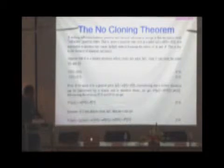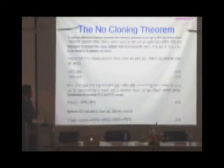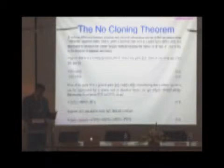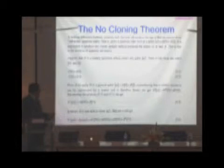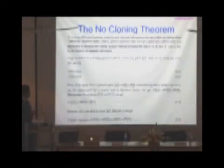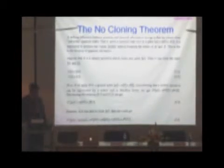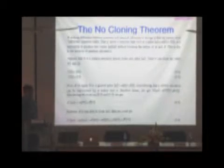Next we come to the no-cloning theorem. A striking difference between quantum and classical information storage is that we cannot clone unknown quantum states. We cannot make a copy of a state, because if you have to copy it, you have to first measure it, and once you measure it, you end up destroying it. That is, given a quantum state |χ> = α|0> + β|1>, it is impossible to produce two copies |χ>|χ> without knowing the values of α and β. This is due to the linearity of quantum mechanics.